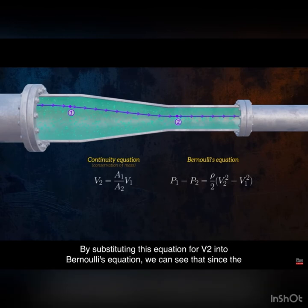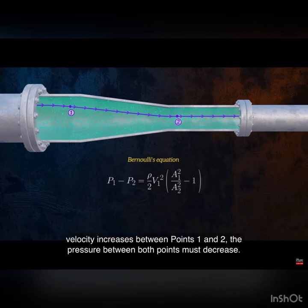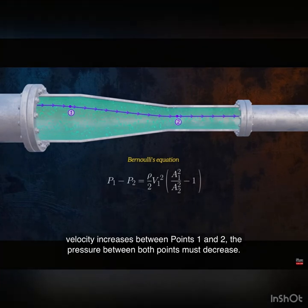By substituting this equation for v2 into Bernoulli's equation, we can see that since the velocity increases between points 1 and 2, the pressure between both points must decrease.